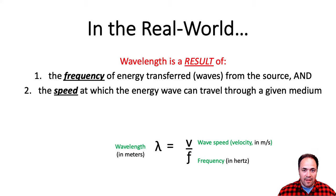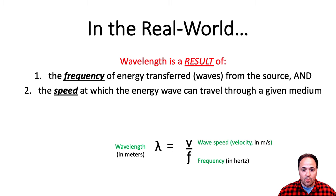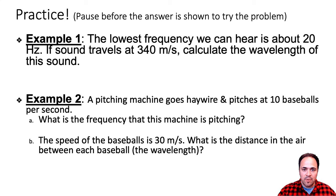This rewritten formula makes more physical sense: to have a wavelength, we need a wave, and to have a wave, we need a source. We start with a wave source providing energy at a certain frequency, that energy travels through a medium at a certain speed, and the result is a wave with a particular wavelength.